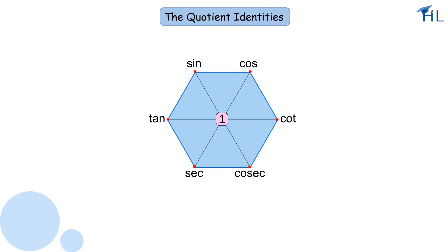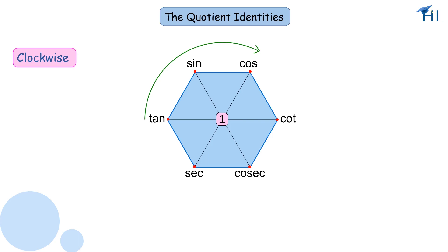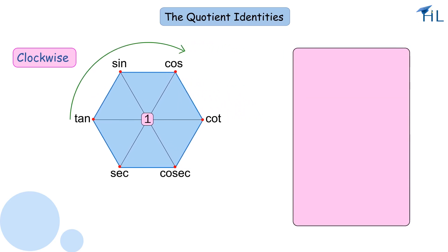What do we get out of it? Well, we can now follow around the clock to get all the quotient identities. Let us first draw an arrow from tan to cos in a clockwise direction. This arrow shows the relationship that tangent is the ratio of sin to cos — that is, tan θ = sin θ / cos θ. Going further in a clockwise direction, we get these quotient identities.